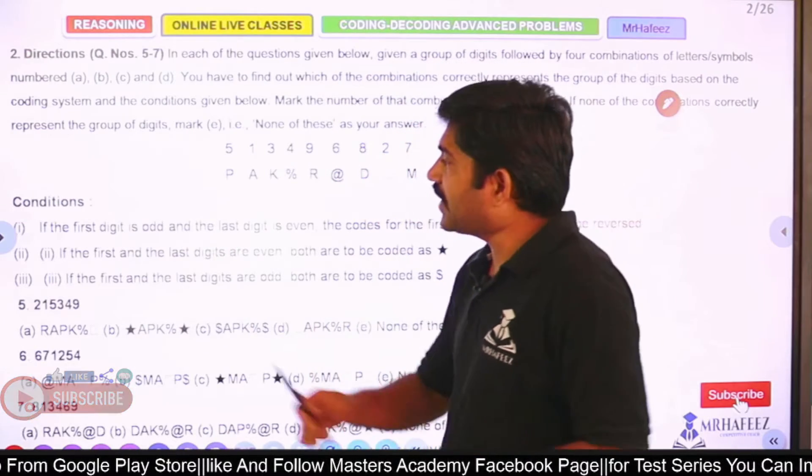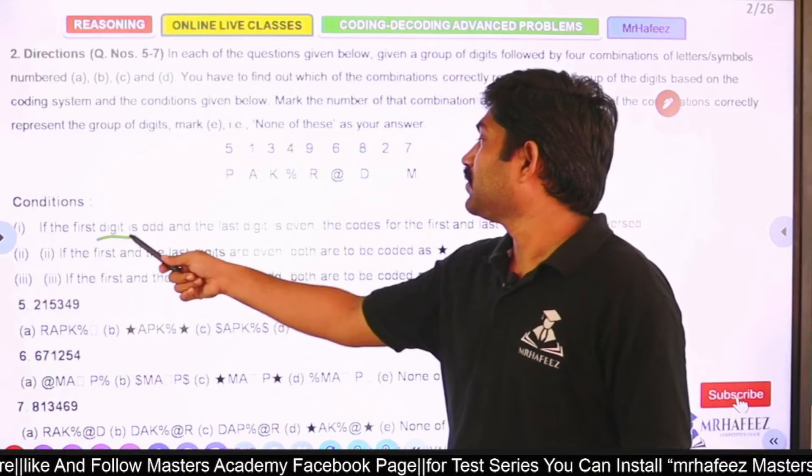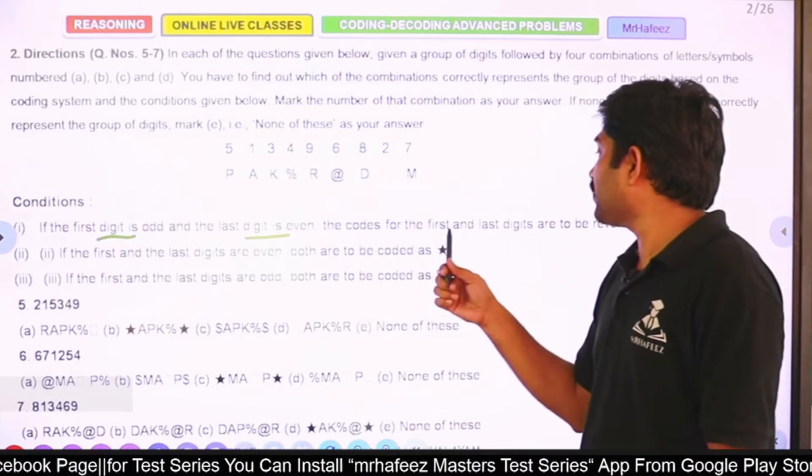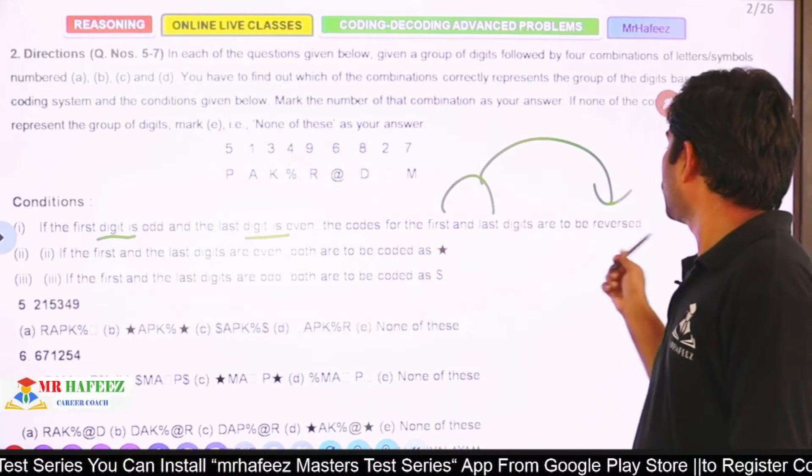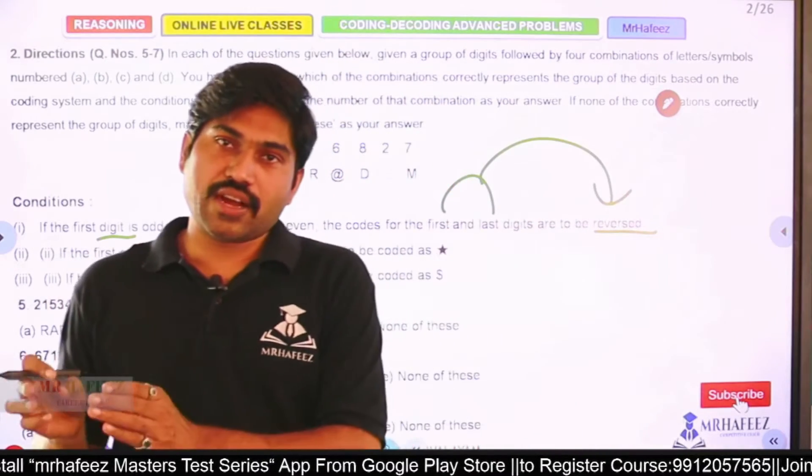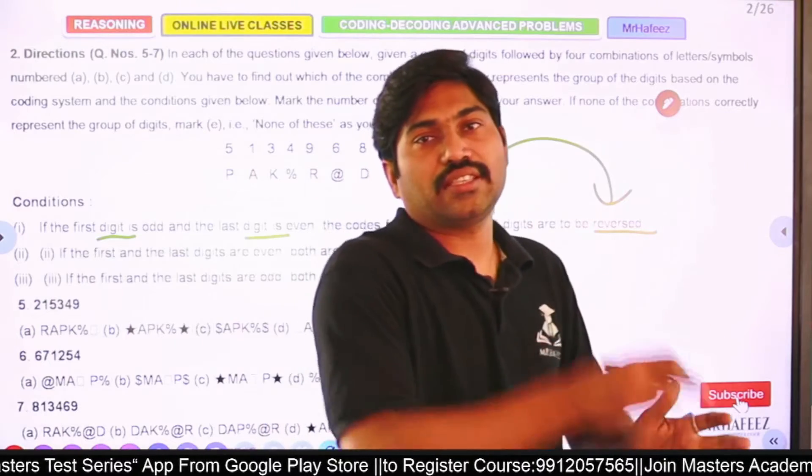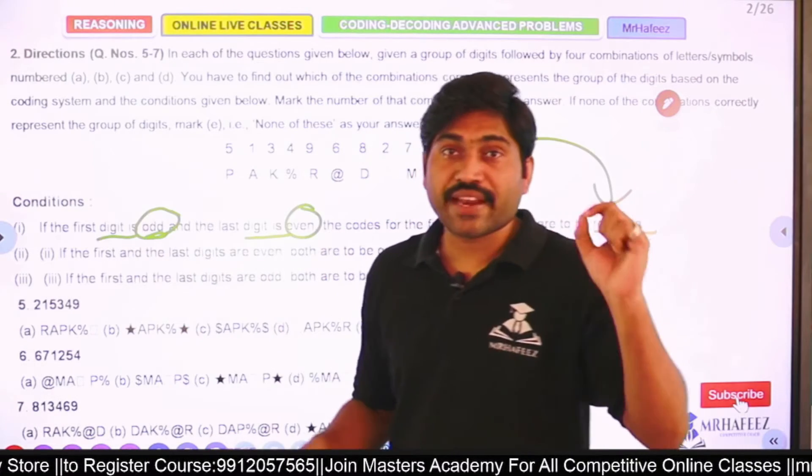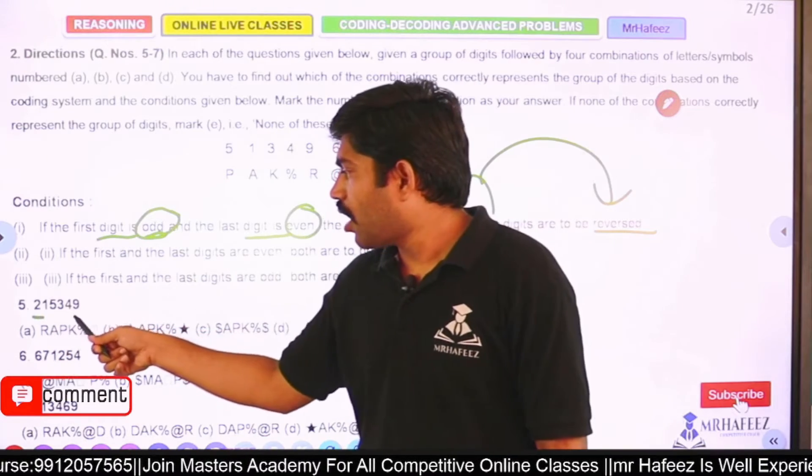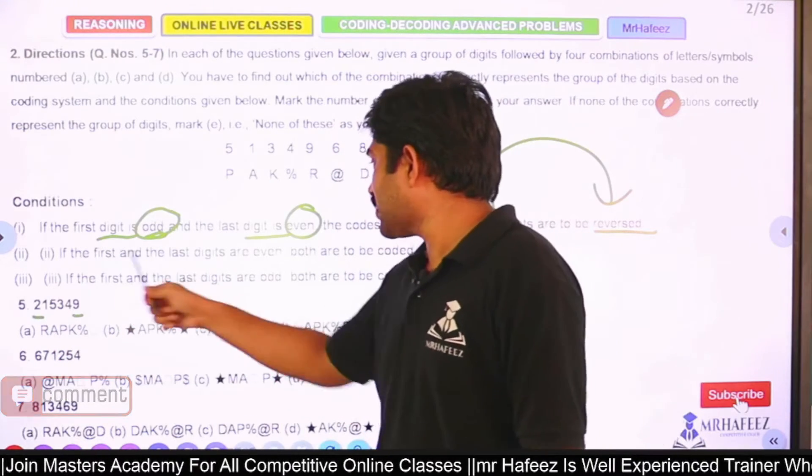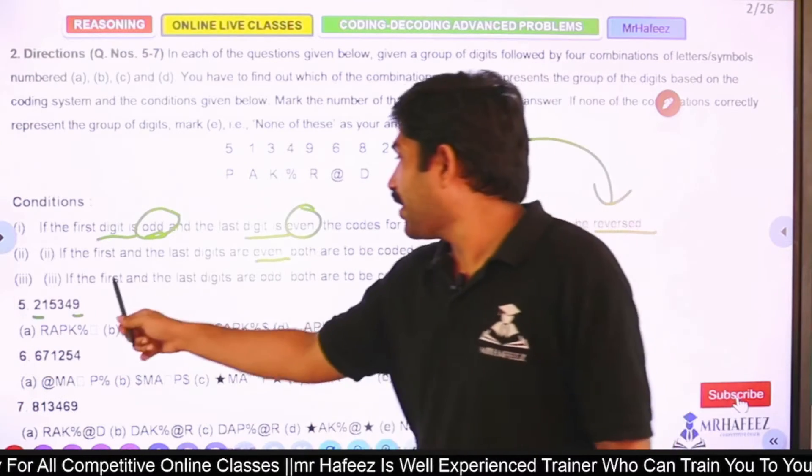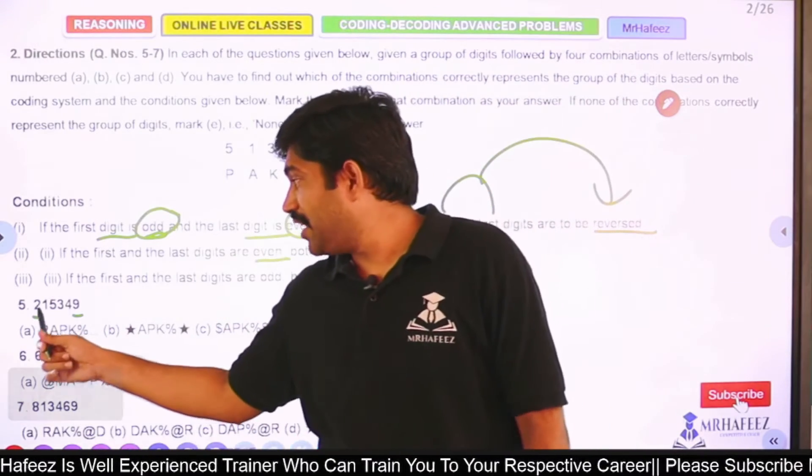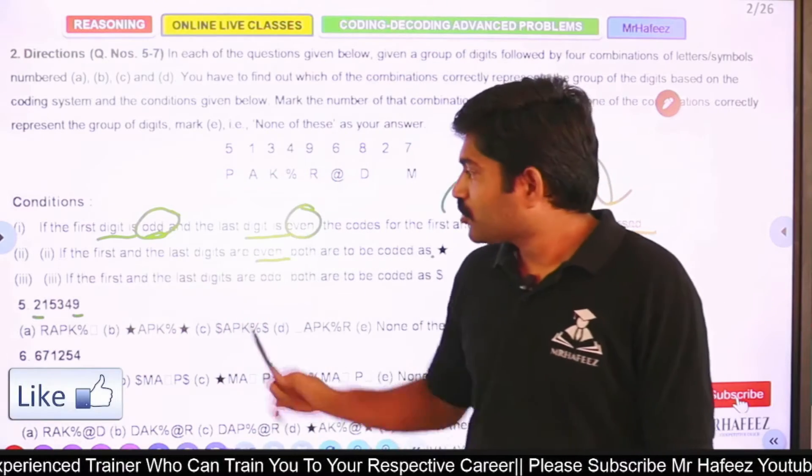So the first condition: the first is odd and last is even. First digit should be odd, last digit should be even. Then what should we do? The codes for the first and last digits are reversed. Those two codes should be reversed - first digit's code goes to last, last digit's code goes to first. When should this happen? When first digit is odd and last digit is even. This is very important. Here even-odd is not there. First digit and last digit both are even, then both coded as star. And first and last digit are odd - this condition is not here. So there is no condition for first even, last odd. I should implement directly.